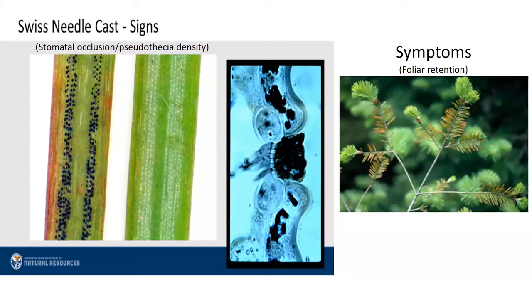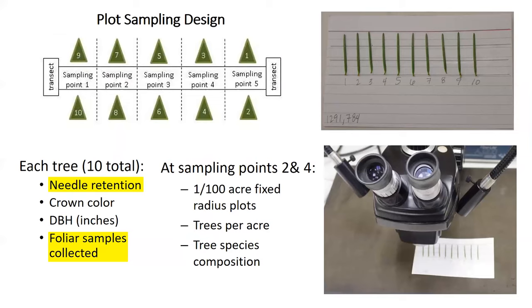Stomatal occlusion — or pseudothesia density — and foliar retention, the amount of needles being retained on a branch, are two measurements we use to characterize disease severity. These measurements are included as part of our ground survey, where we run a transect through a unit, take measurements, and collect samples. Needle retention is evaluated in the field, whereas fruiting body counts and stomatal occlusion are done in the lab from needles collected in the field, examined under a microscope.